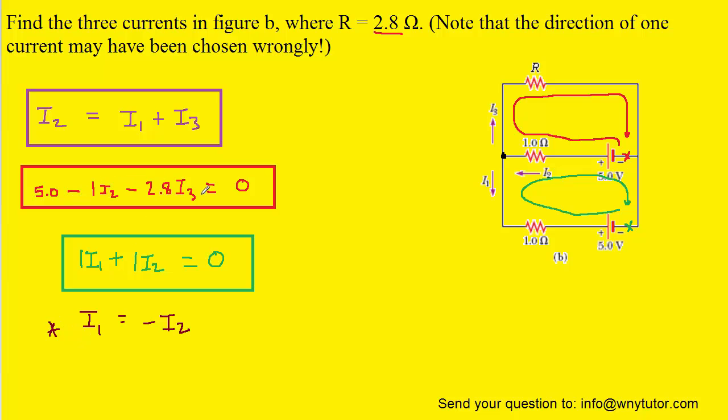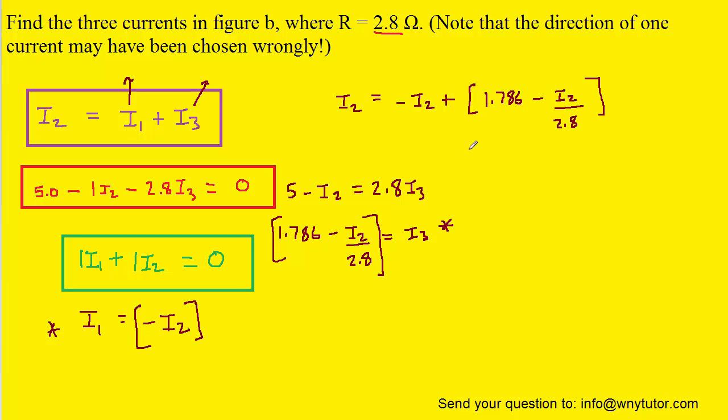Let's solve this equation for I3. To do that, we can add the 2.8 I3 over to the right side, and then we can divide each term of the equation by 2.8. So now we have the equation solved for I3. Now the reason this is important is notice that I3 is solved in terms of I2, and I1 is also solved in terms of I2. That's basically your goal with the loop rule equations: to solve so that the equations are in terms of the same variable, in this case I2. So now we go back to the junction rule equation, and for I1 we're going to substitute in the negative I2, and for I3 we're going to substitute in this expression right here.